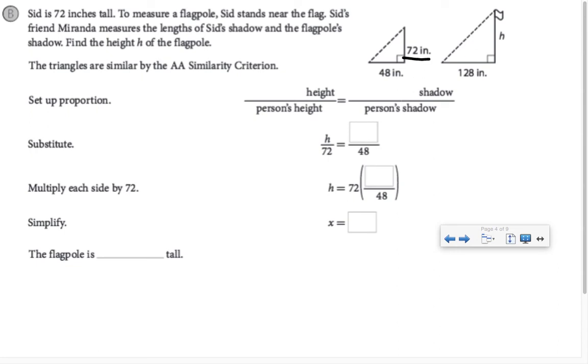So they've got the proportion set up in a little bit of a different manner, but it is an equivalent proportion. They've got the flagpole's height over the person's height equals the flagpole's shadow over the person's shadow. And then they're substituting the measurements in. So H is to 72 as 128 is to 48.